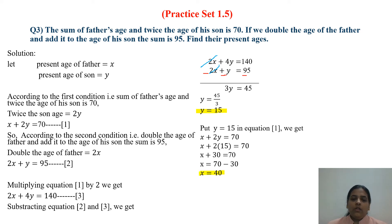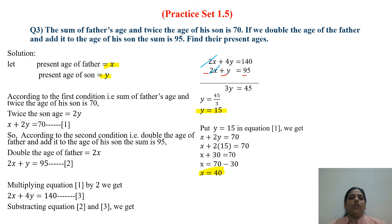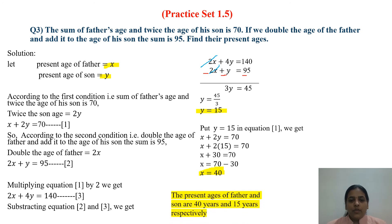Recall that X is the present age of the father and Y is the present age of the son. So the present age of the father is 40 years and the present age of the son is 15 years. This is the solution to question number 3 from practice set 1.5.